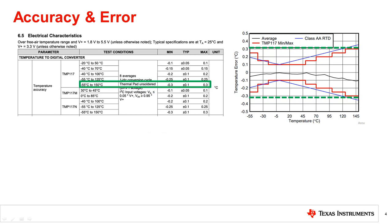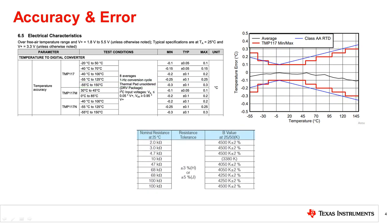Analog sensors like NTC thermistors specify the accuracy in terms of the resistance and beta value tolerance. These are often specified as a percentage and require conversion to absolute scale. Additionally, the nonlinear behavior may lead to absolute error much larger in a specific temperature range. Although not all systems require such a high degree of accuracy or linearity, it is important to understand the specifications and how additional error may still affect the overall temperature measurement.